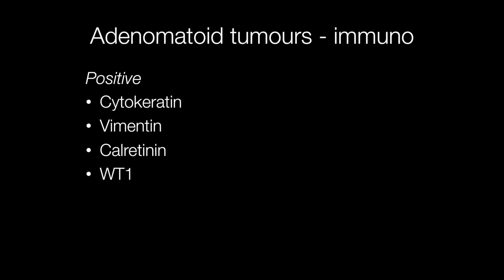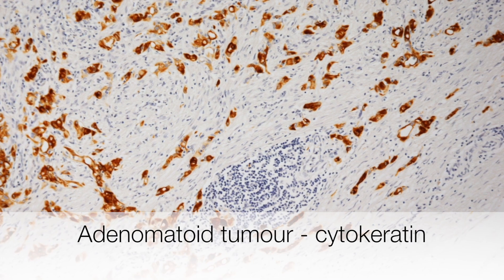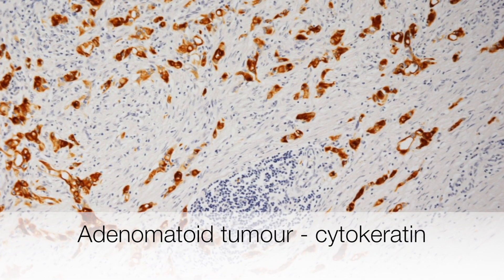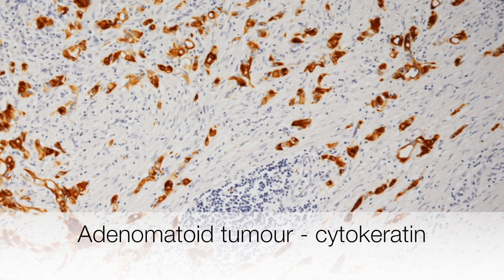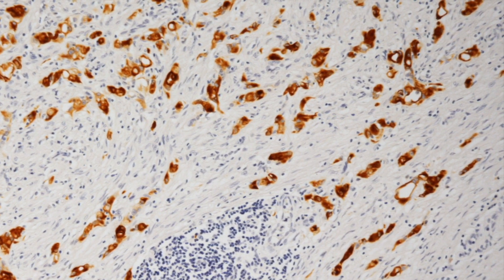The immunoprofile of adenomatoid tumour cells is the same as that of mesothelial cells. The positive stains are cytokeratins, vimentin, calretinin, and WT1. As an example, here is an adenomatoid tumour showing strong positive staining for cytokeratin.